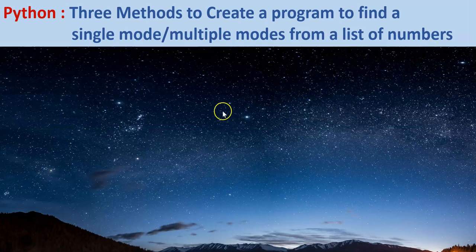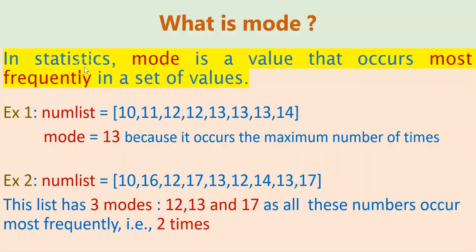First of all, let's look at what mode is. In statistics, mode is a value that occurs most frequently in a set of values. For example, let's consider this list of numbers, num_list. We can see that number 13 appears 3 times — that is the maximum number of times — whereas number 12 appears 2 times and the rest appear only once. So the mode is 13 because it occurs the maximum number of times.